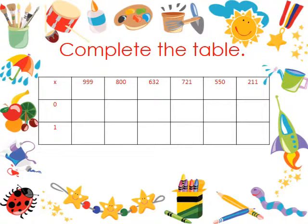In this slide, we have to complete the table. As I said before, any number we multiply by 0 will give us? 0. Any number we multiply by 1 will give us? The same number. So, 0 times 999. 0.